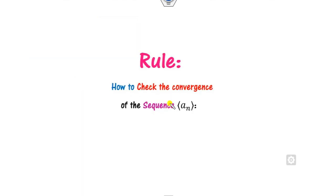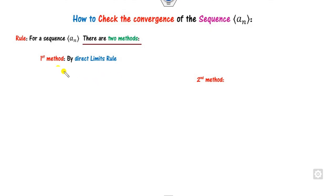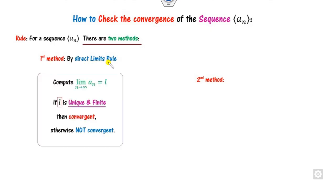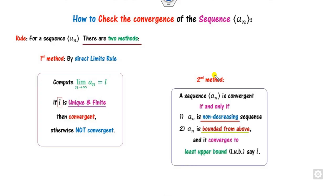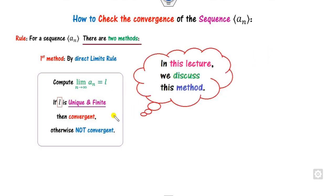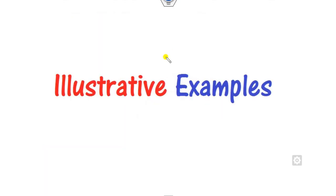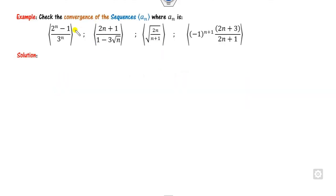Now, how can you check the convergence of a sequence? There are two different methods. The first method is by using the direct limit rule: compute the limit, check whether l is unique and finite — if so, it is convergent; otherwise not. The second method: a sequence a_n is convergent if you can prove it is non-decreasing and bounded above. We will discuss this in our next lecture. In this video, we will discuss 10 examples so you can understand more quickly.